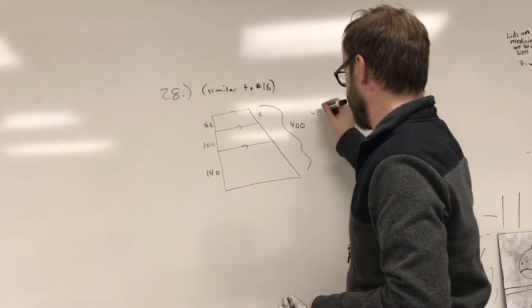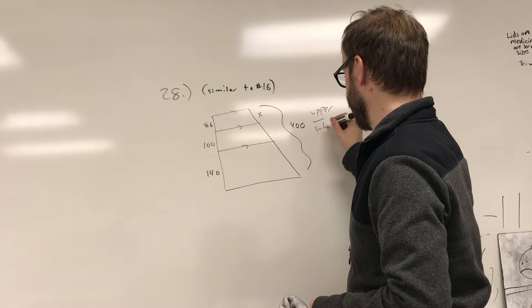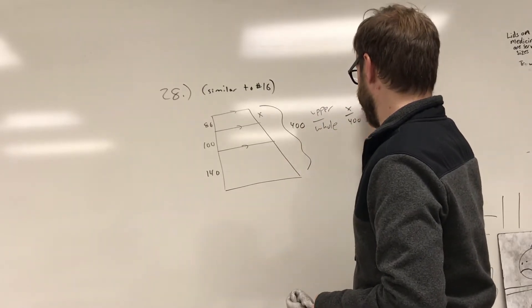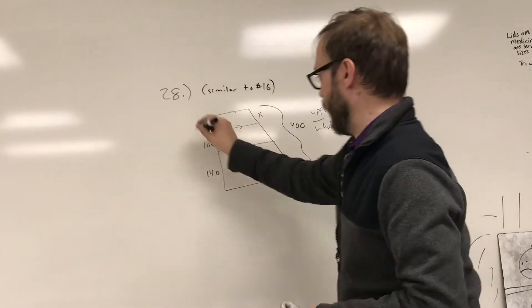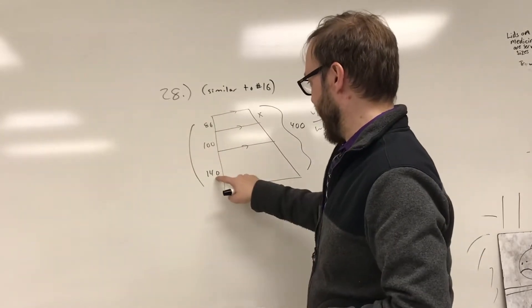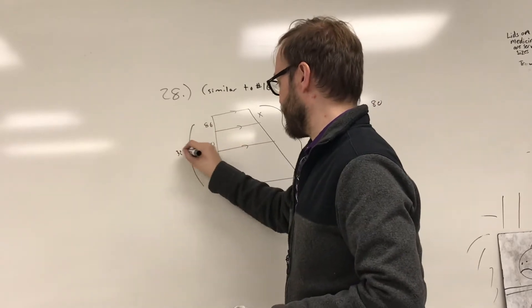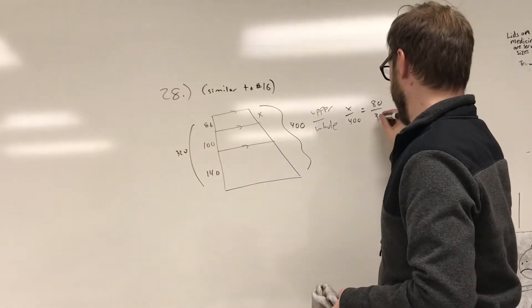Let's do a comparison between the upper part and the whole. So x over 400 is equal to the upper part here over the whole. And let's see, the whole here is going to add up to, let's see, that would be 220 plus 100 is 320. So 320 will be the whole.